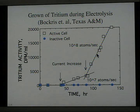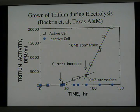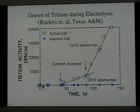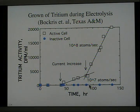This was a rather unique experiment, because finely divided dendrites were found on the cathode surface, and when this cell was shaken, tritium production stopped, and it did not resume until these dendrites had reformed. Notice also that a cell run at the same time that was not active, but was subjected to the same conditions, showed no increase in tritium.